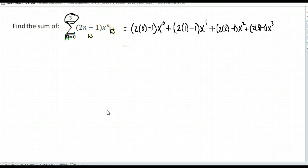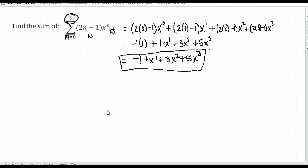Let's simplify these. Two times zero is zero, minus one is negative one. X to the zero power - anything to the zero power is just one - so we get negative one times one. Our next term: two times one is two, minus one is one, times x to the first power. Next, two times two is four, minus one is three, times x squared. Plus two times three is six, minus one is five, times x to the third. So we end up with negative one plus x plus three x squared plus five x to the third. That's as simplified as that gets because none of those are like terms. So there is our summation.